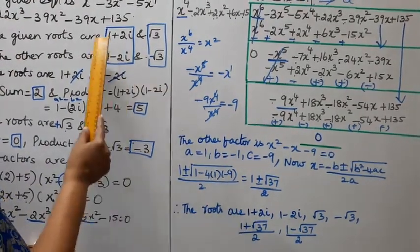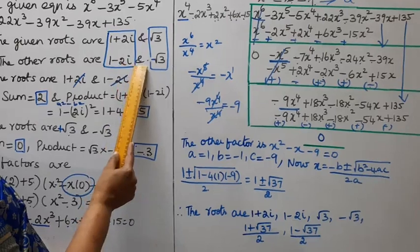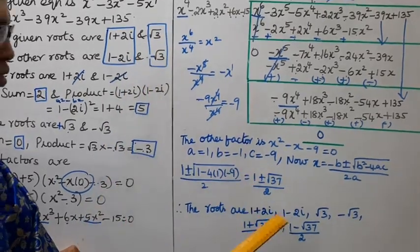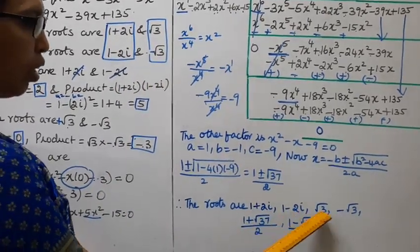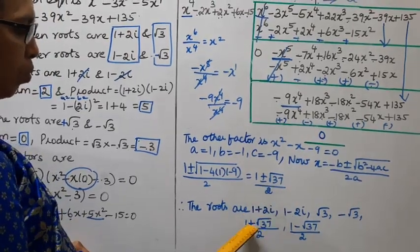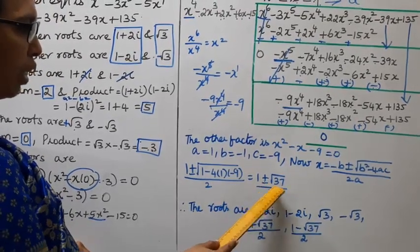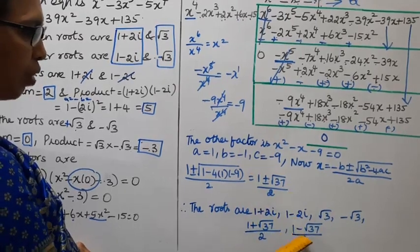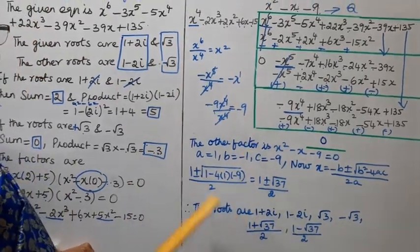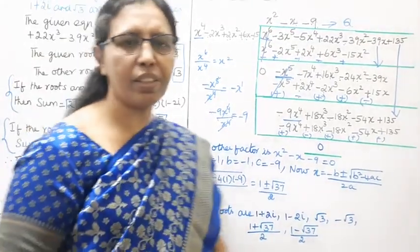The six roots of the polynomial are: 1+2i, 1-2i, √3, -√3, (1+√37)/2, and (1-√37)/2. You can practice this method. This is all the roots of the given polynomial.